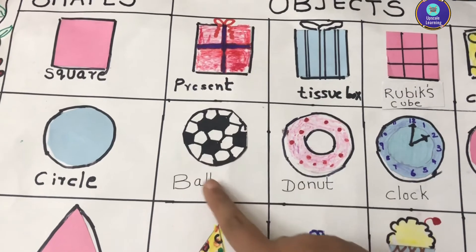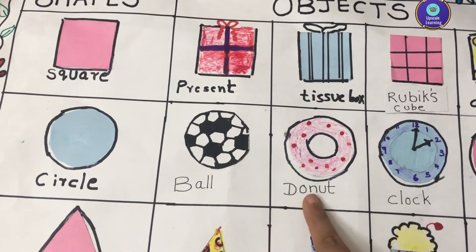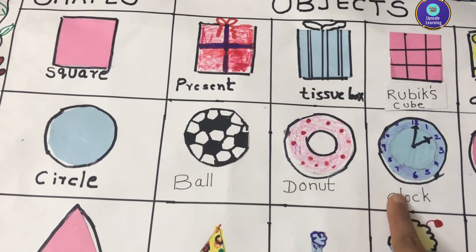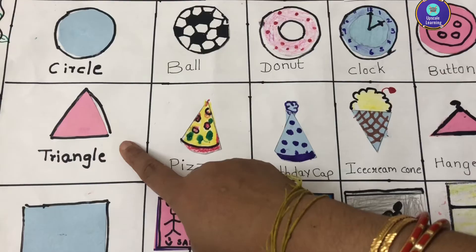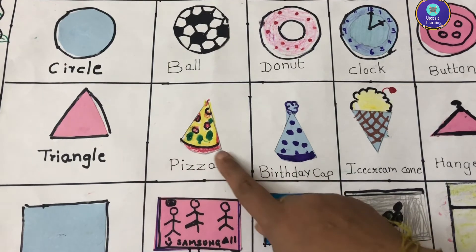In circle we have ball, donut, clock and button.